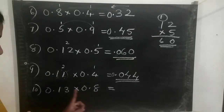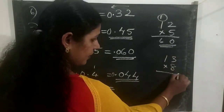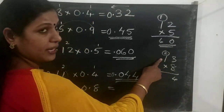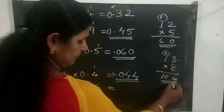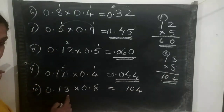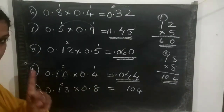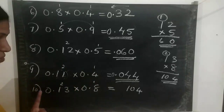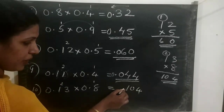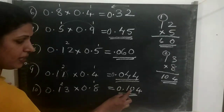Next is 0.13 into 0.8. We multiply 13 into 8: 3 eights are 24, carry 2; 1 eight is 8, plus 2 is 10. So we get 104. Then count the places — in 0.13 there are 2 places, and in 0.8 there is 1 place. Total: 2 plus 1 equals 3 places. Count 1, 2, 3 from right to left and put the point. The answer is 0.104.